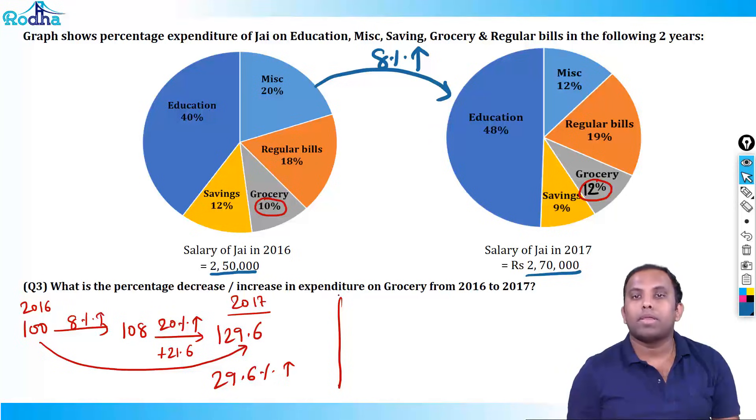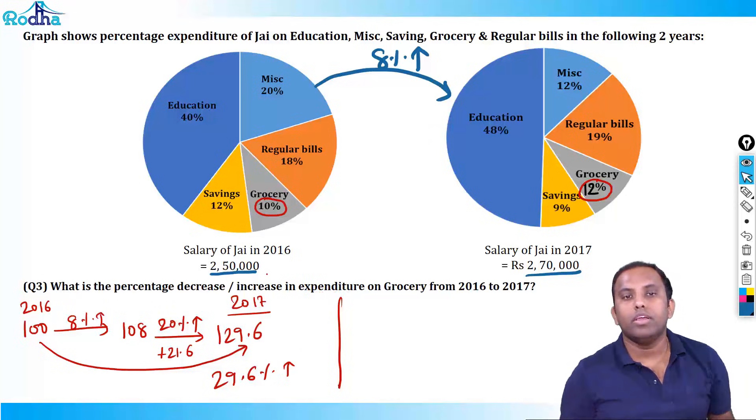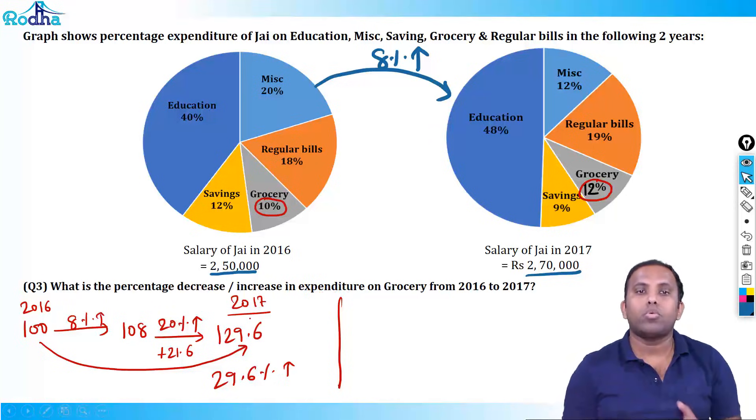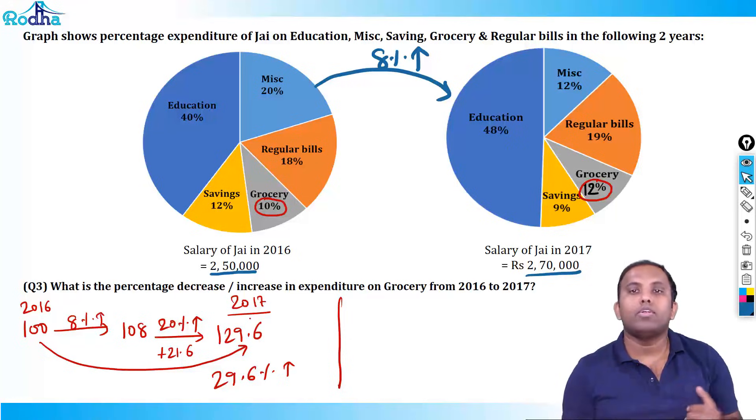Applying A + B + AB/100, same as the first question — this answer is the same as the first question. The successive change funder is very, very important here.